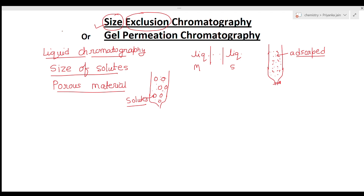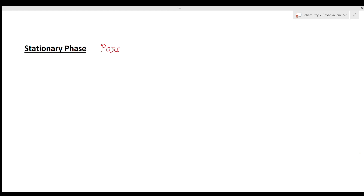Smaller solutes spend proportionally more time within the pores compared to larger solutes, and hence smaller solutes take longer to elute from the column. In this way, different solute particles get separated on the basis of their size. In chromatography there are two phases — the stationary phase is a porous material.